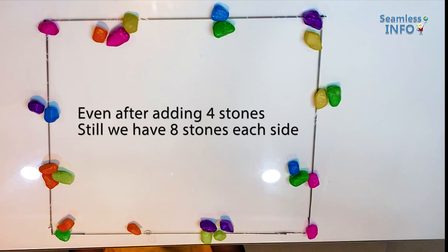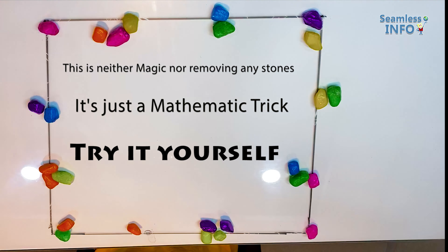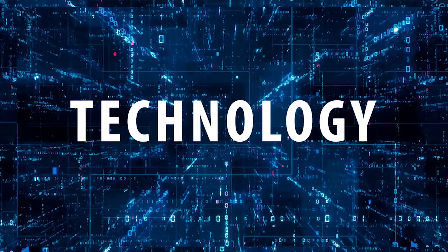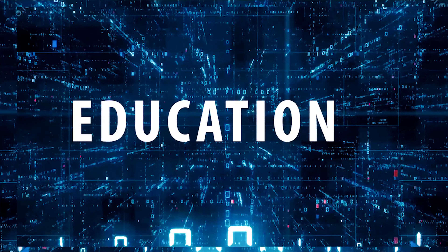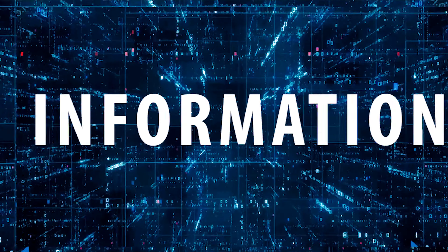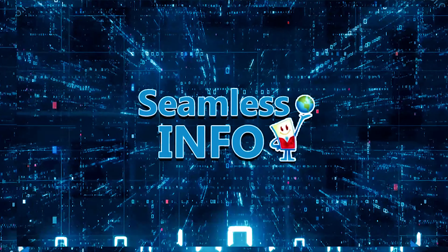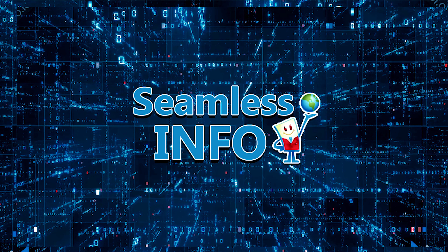We have 1, 2, 3, 4, 5, 6, 7, 8 stones on the left side, 1, 2, 3, 4, 5, 6, 7, 8 stones on the right side, 1, 2, 3, 4, 5, 6, 7, 8 stones on the top side, and 1, 2, 3, 4, 5, 6, 7, 8 stones on the bottom side. Even after adding 4 stones, there are still 8 stones on each side. This is no magic — this is just a mathematical trick. Thank you for watching this video. We will meet again with another interesting video. Until then, bye. We will see you next time.